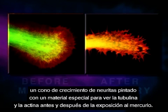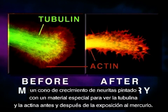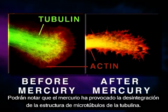Shown here is a neurite growth cone stained specifically for tubulin and actin before and after mercury exposure. Note that the mercury has caused disintegration of tubulin microtubule structure.